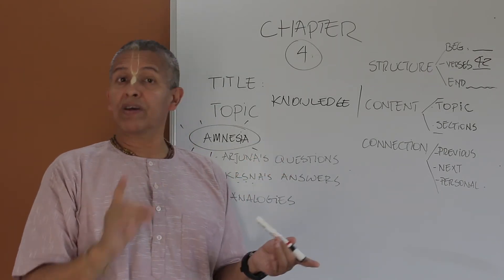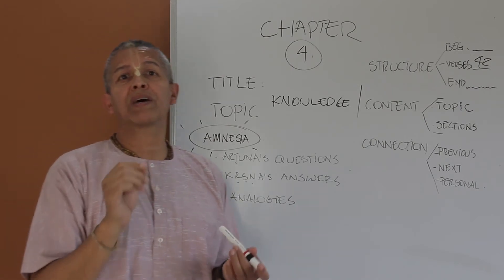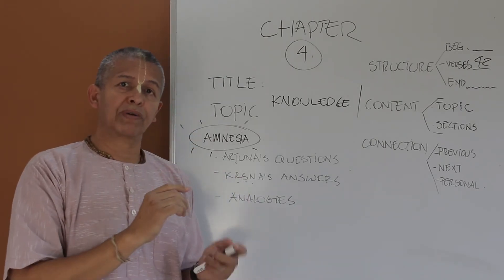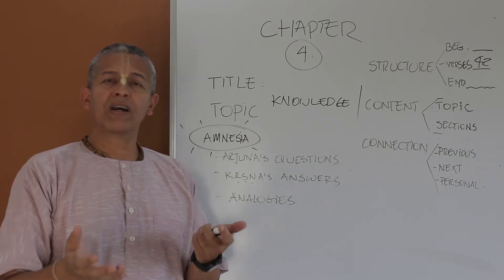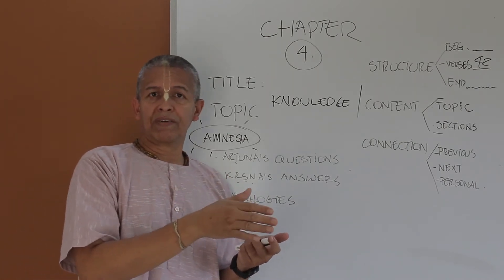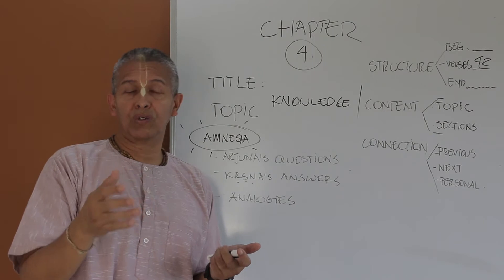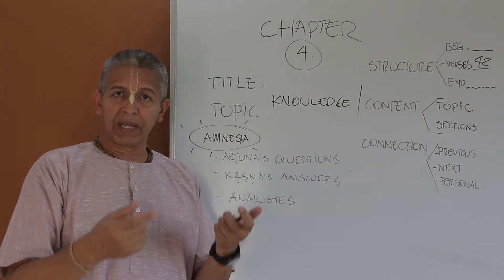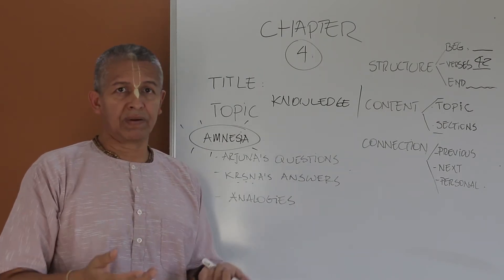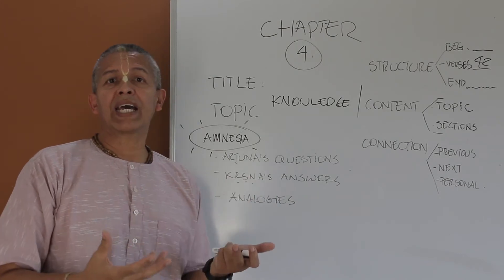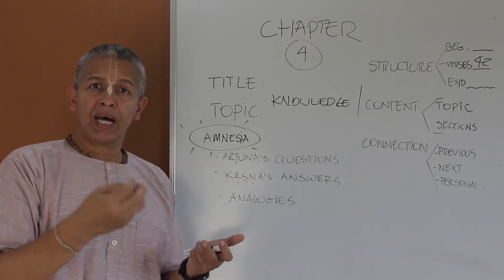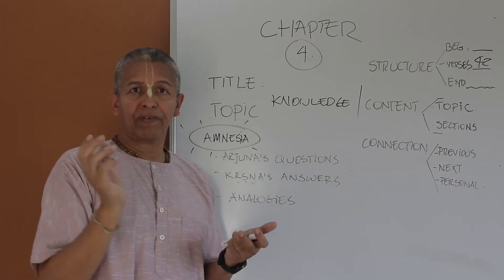Now Arjuna, the only question by the way, the only question that we find from Arjuna in this chapter is when he asks Krishna, how come could you taught Bhagavad Gita to Vivasvan when he's senior to you by birth? And Krishna explains that the nature of his appearance, the nature of his identity, his supreme, the supreme lord of everything.